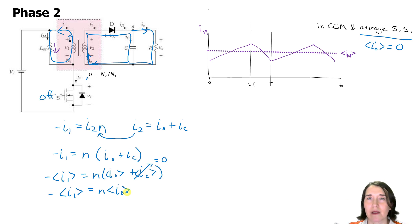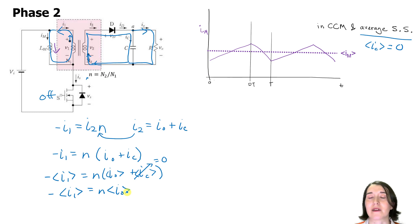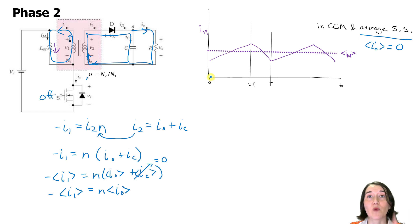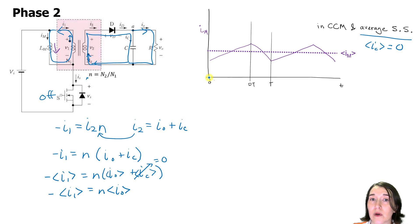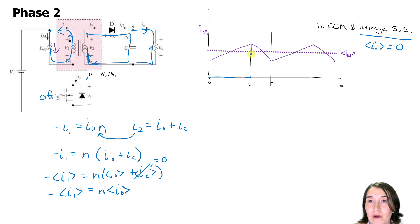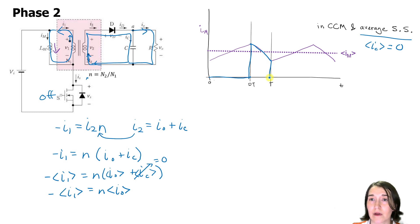Now let's look at i1 relative to the magnetizing current plot. During phase one, i1 on the primary side of the ideal transformer is zero because no current flows through it then. When the switch is off and current flows through the transformer, i1 jumps up to the same value as the magnetizing inductance current, follows the declining ramp, then drops back to zero and repeats.